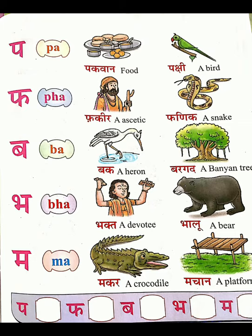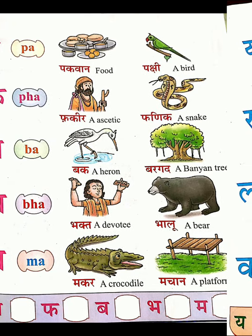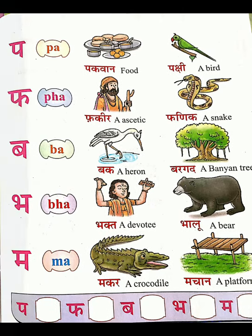MAA — 'machan', M-A-C-H-A-N — a platform, P-L-A-T-F-O-R-M. So these are all the words from PHA to MAA.